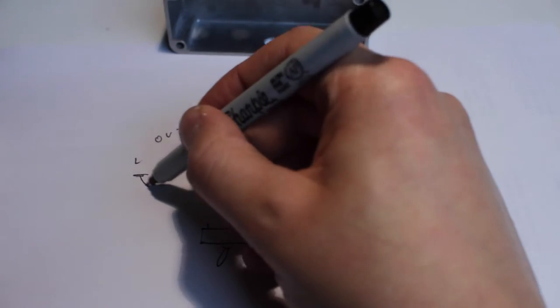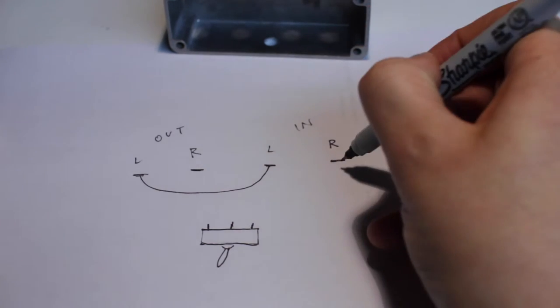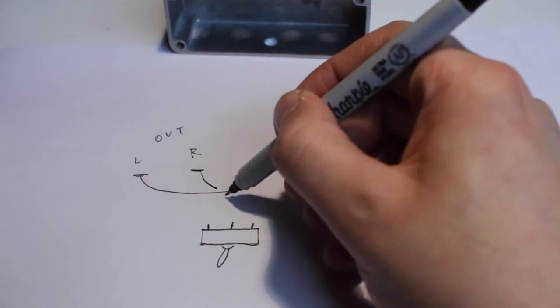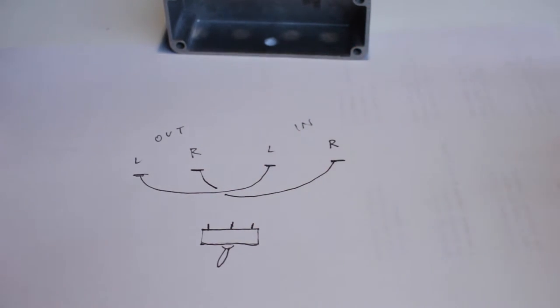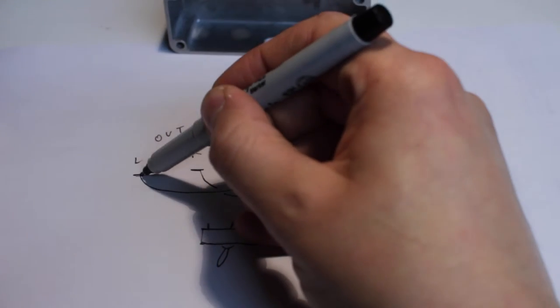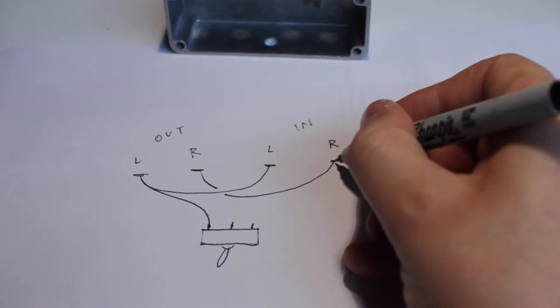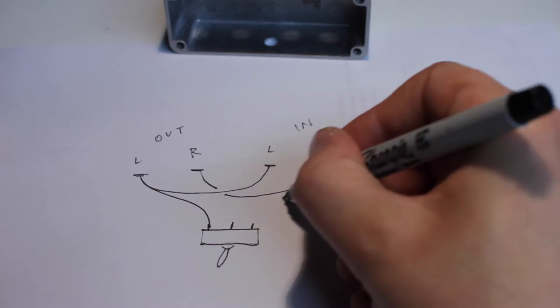So, the left in and left out will always be connected to each other, and the right in and right out will always be connected to each other. Let's try the left out connected to this throw of the switch, and the right in connected to the pole of the switch.